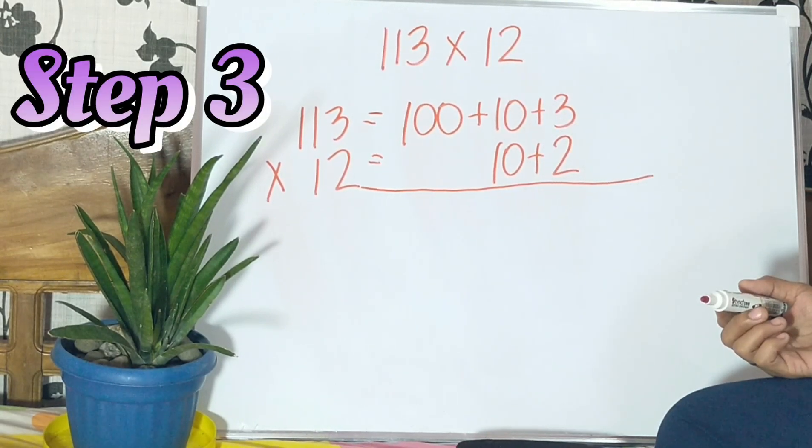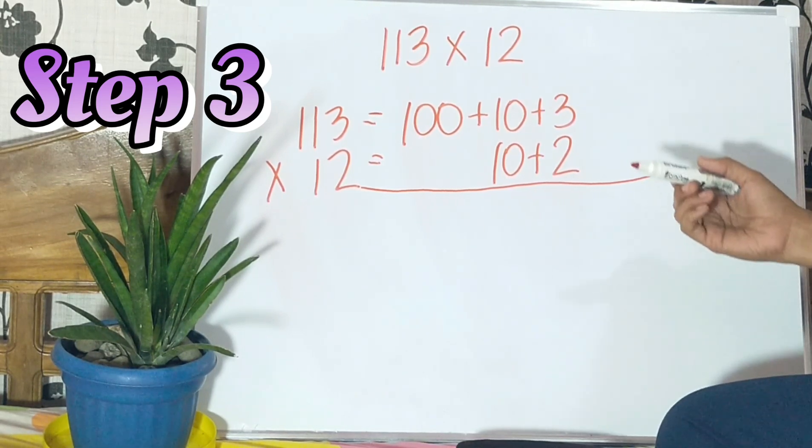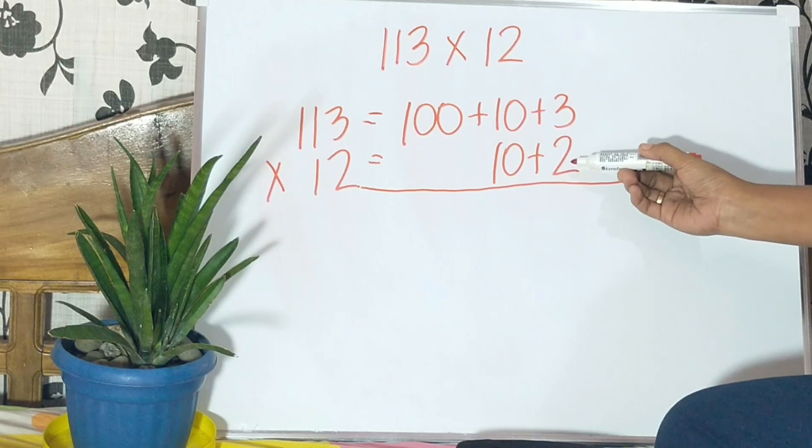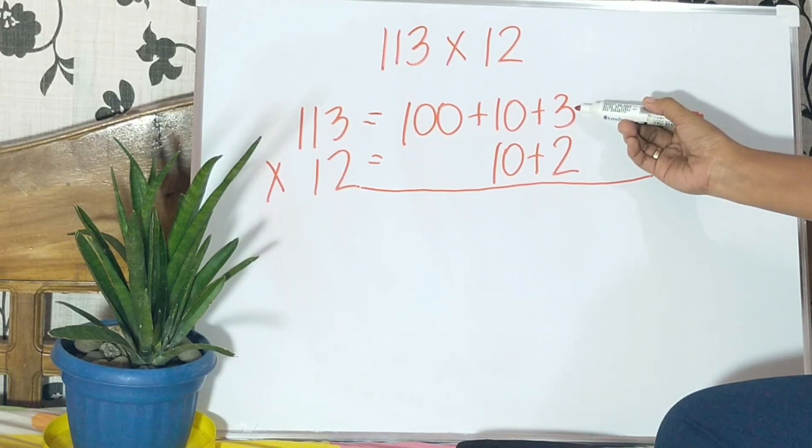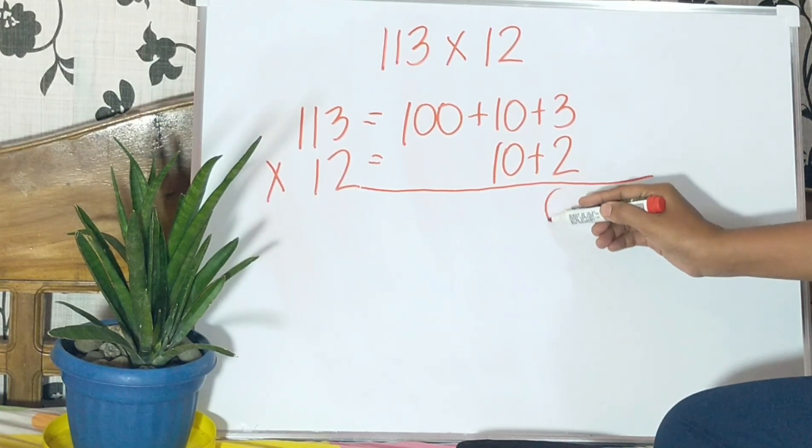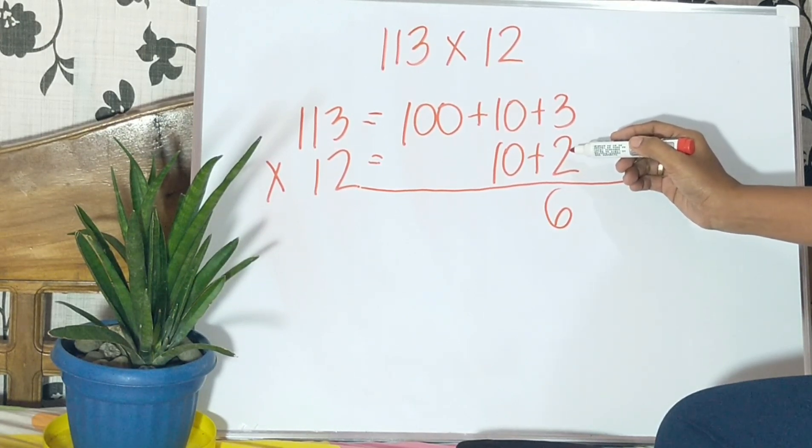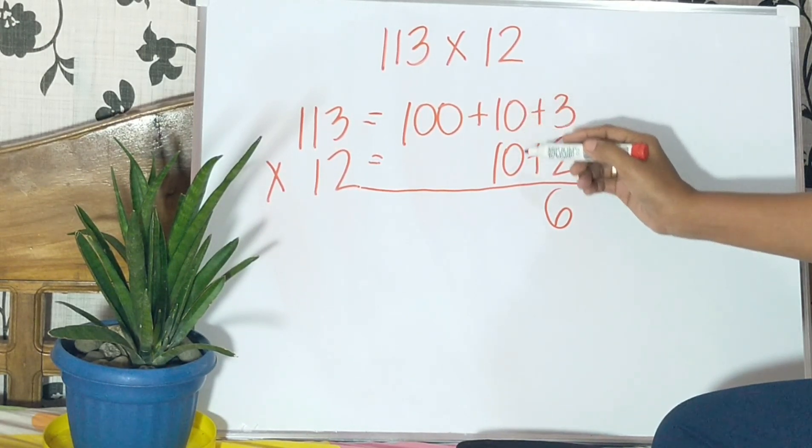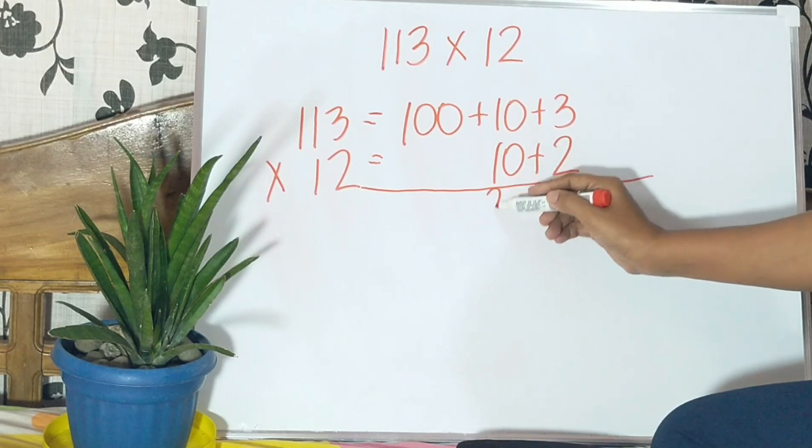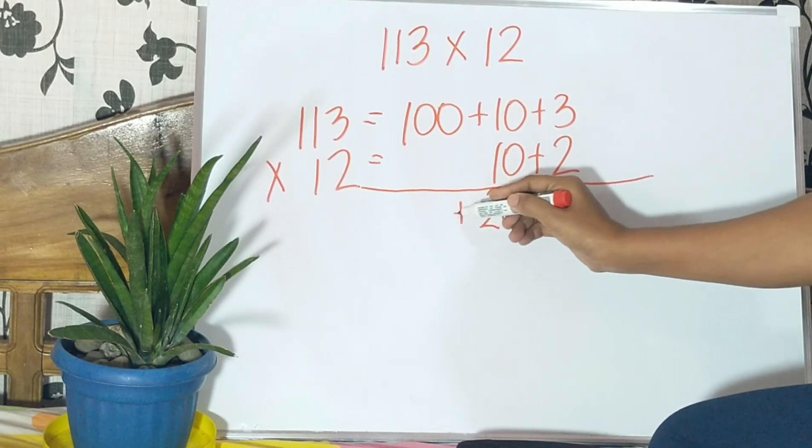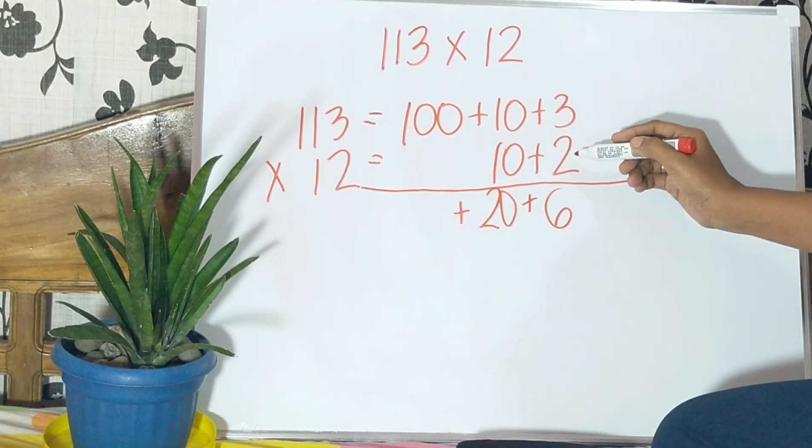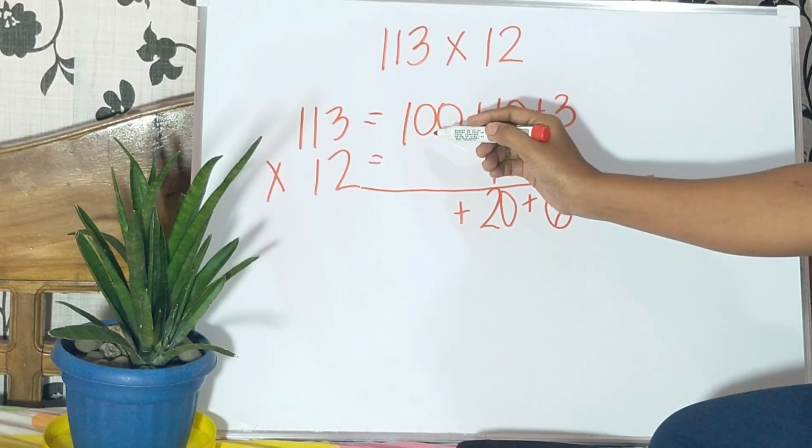Step 3: Multiply the ones digit of the multiplier by the multiplicand. So, 2 multiplied by 3 is 6, 2 multiplied by 10 is 20, and 2 multiplied by 100 is 200.